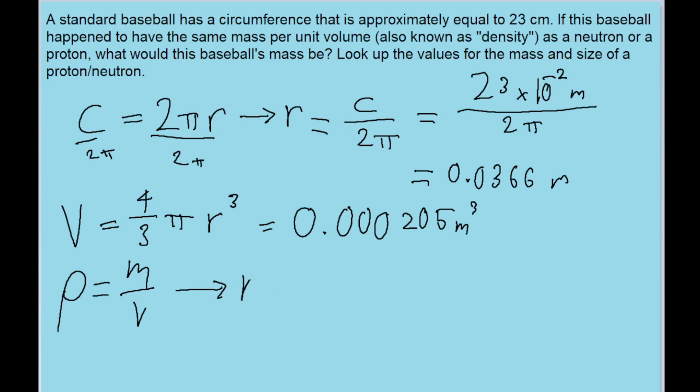So if we want to find the mass of the ball, let's rewrite this. So that means that m, the mass, is equal to the density times the volume. And the volume of the baseball we just found. But the problem is asking us to have the density be equal to the density of a proton or a neutron. So again, density is mass over volume. So you'll have to look up what the mass of a proton and the volume of a proton is.